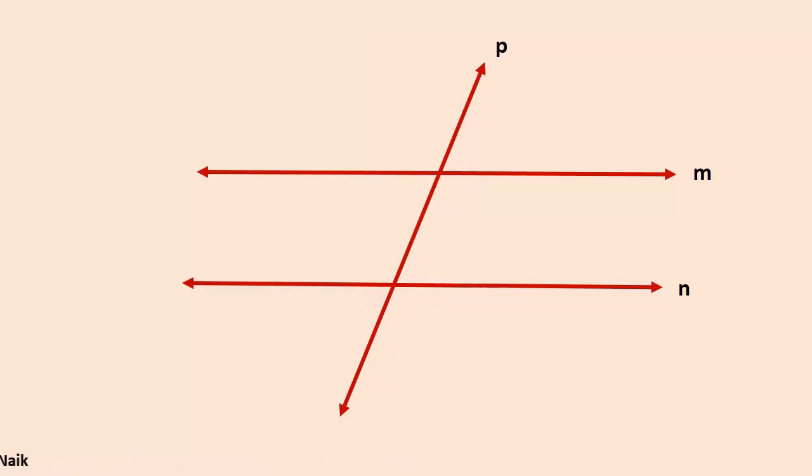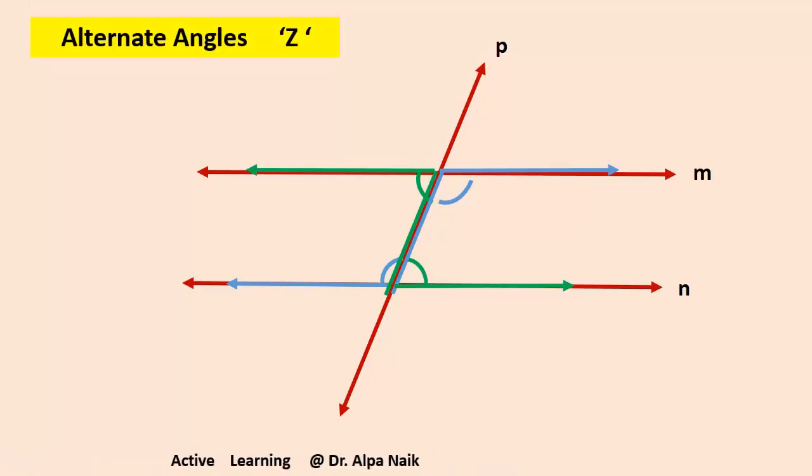Yes children, these angles all together are eight, but among these eight angles they have some specific properties. Let us see. Observe these angles. Can you recollect any shape from these two angles? If I see the blue color pair, I can see the English letter Z. Same way, in green color these two pairs of angles are there, it's the reverse of Z. So such type of angles are known as alternate angles and you can identify them by identifying the letter Z.